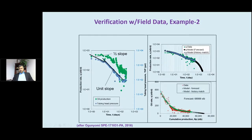Here's another example showing the same thing: we have the half-slope line followed by a very well-defined unit slope response, and again we can project the rest of the behavior fairly well.